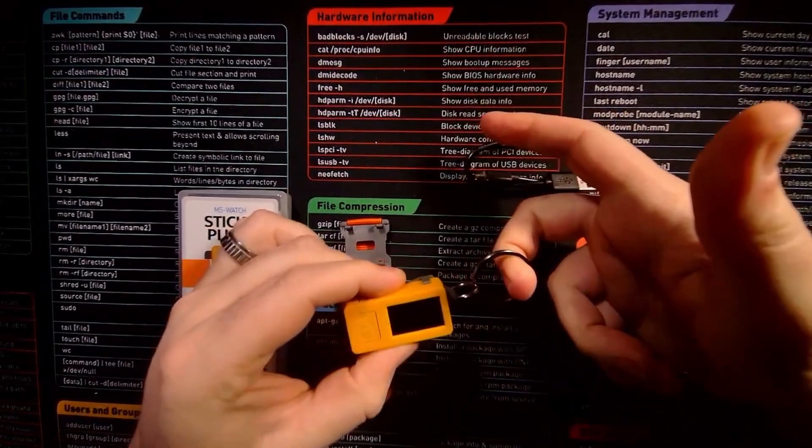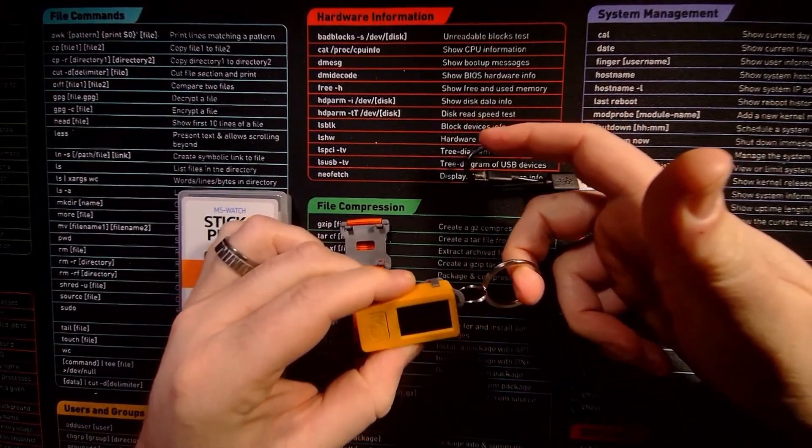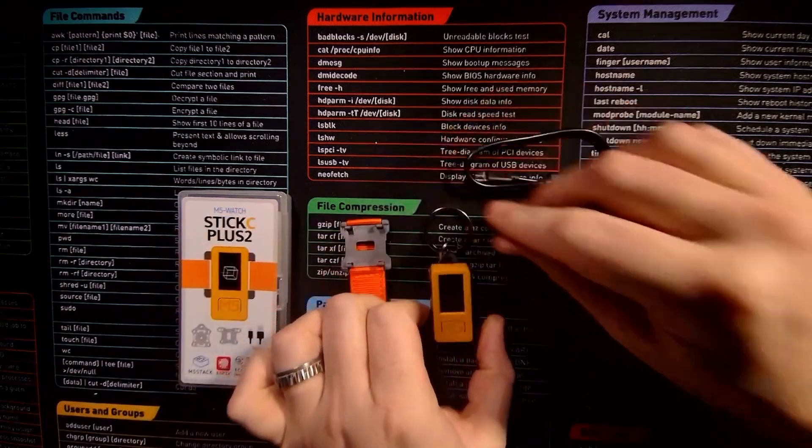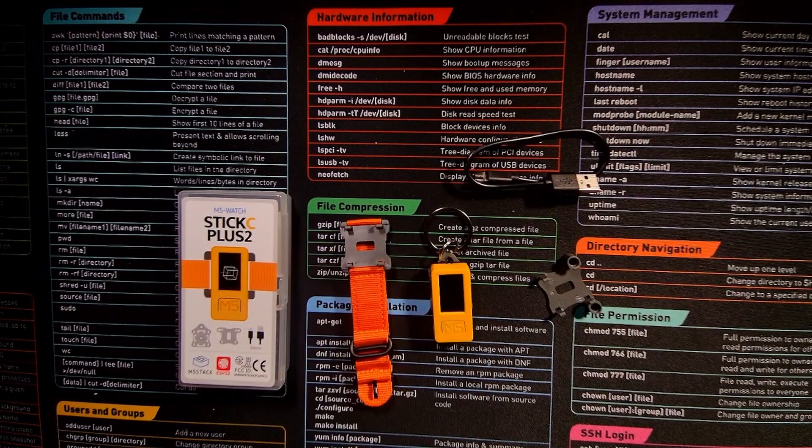Just like so. If you end up running something like Bruce or Evil M5, it means you can actually carry around the ESP32 device with you in your pocket.